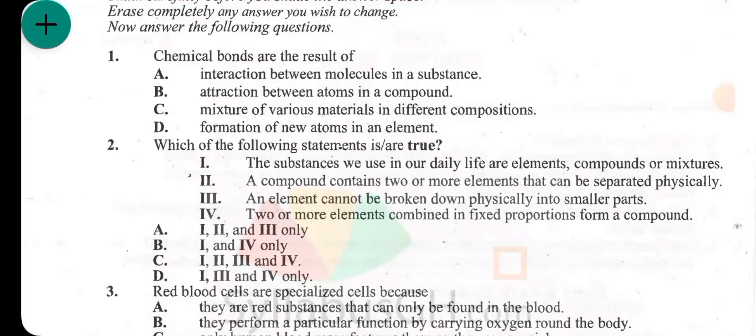So I'll start, I'll read, I'll give you a few seconds, we try to answer, then I'll give the correct answer. Question 1: chemical bonds are the result of A, interaction between molecules in a substance, B, attraction between atoms in a compound, C, mixture of various materials in different compositions, D, formation of new atoms in an element. The answer to question 1 is B, attraction of atoms in a compound.